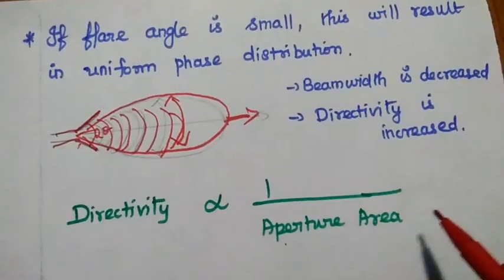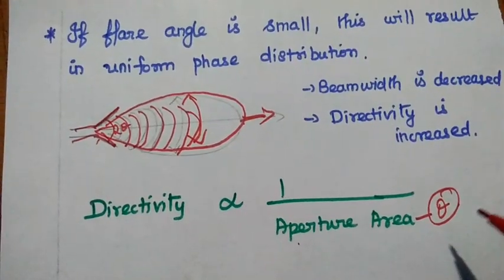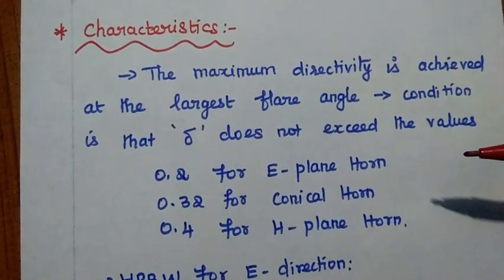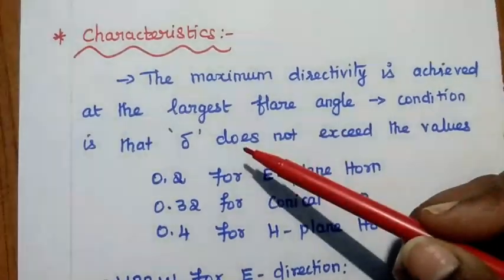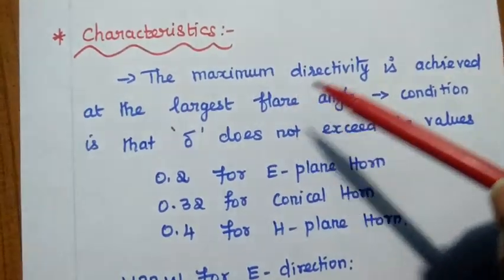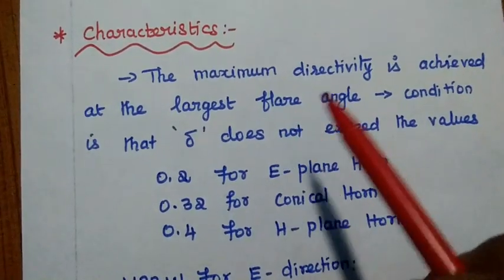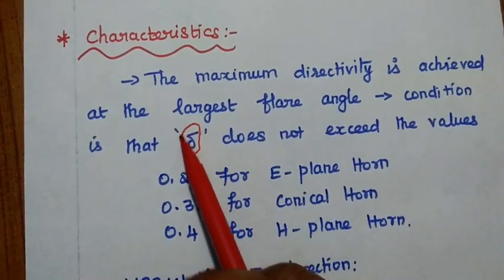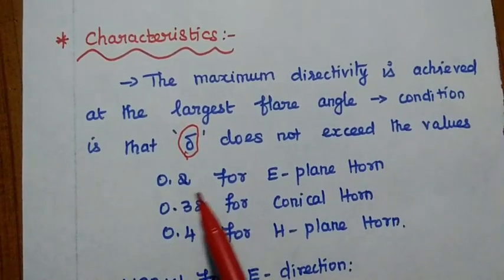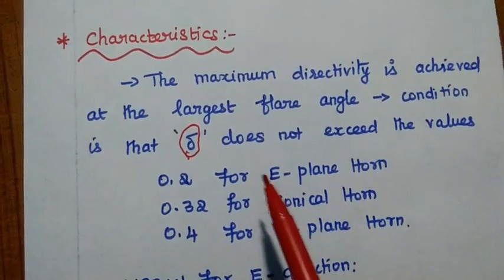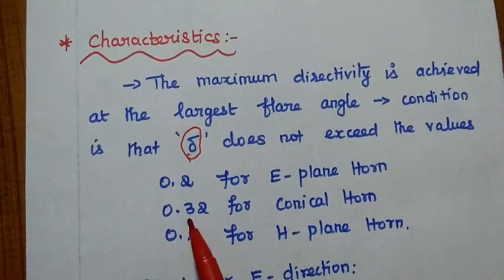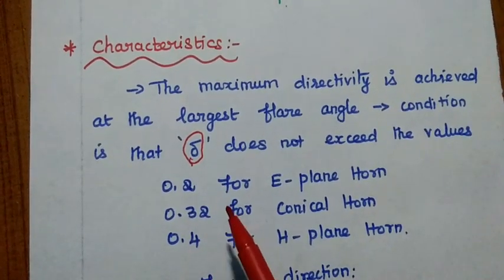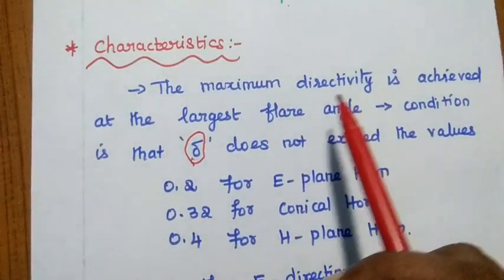From this analysis, directivity is inversely proportional to aperture area, which in turn depends on the flaring angle — so theta is very important in horn antenna design. For maximum directivity with the largest flare angle, there is a condition: the extended length delta should not exceed 0.2 wavelengths for E-plane horn, 0.32 for conical antenna, and 0.4 for H-plane antenna. If this condition is satisfied, maximum signal can be transmitted in a particular direction with the largest flare angle.